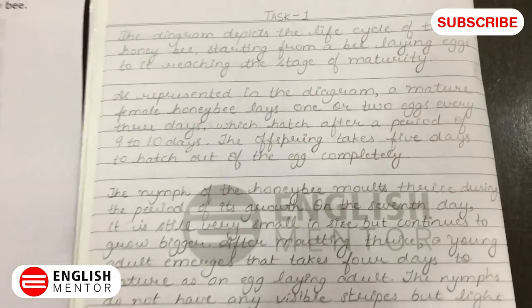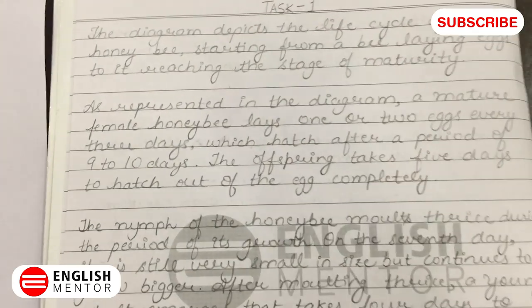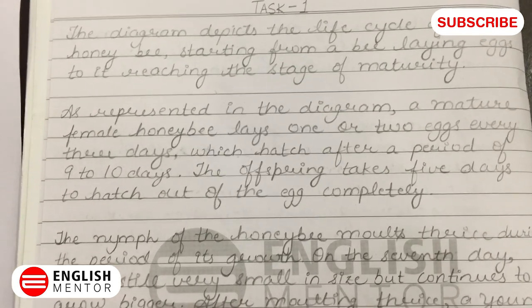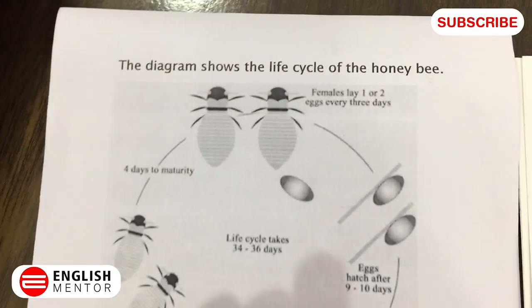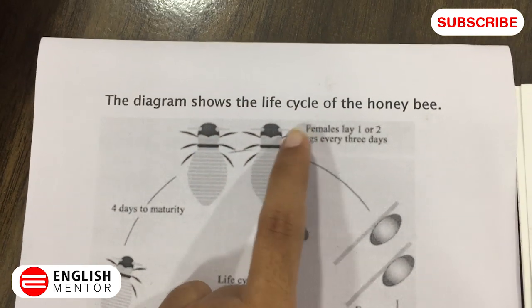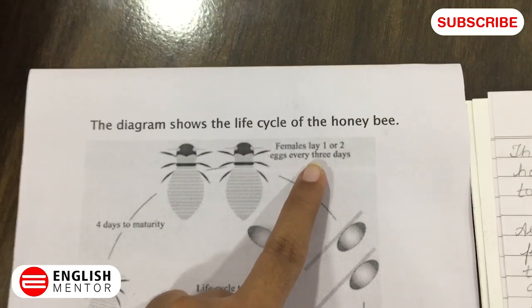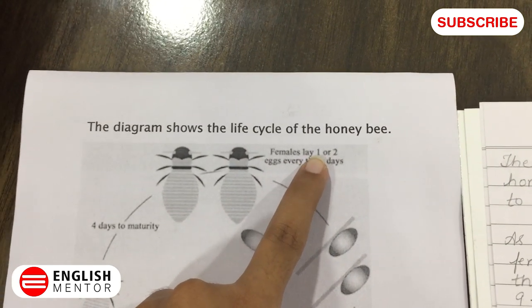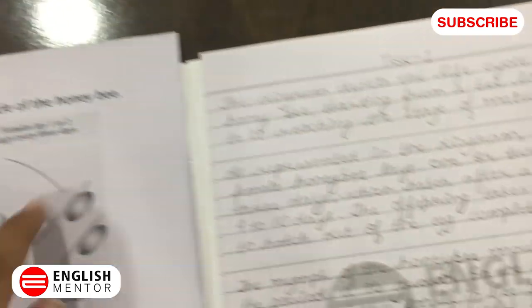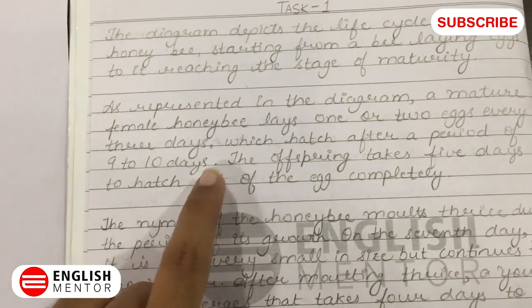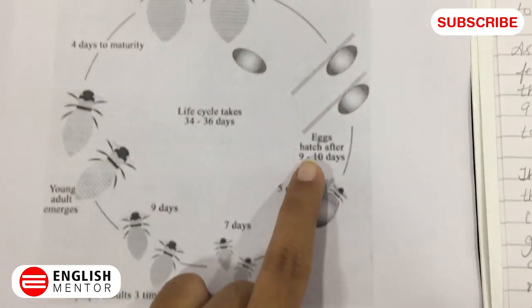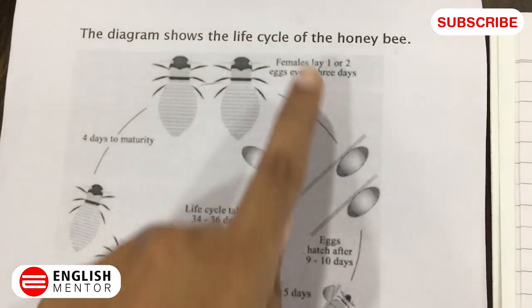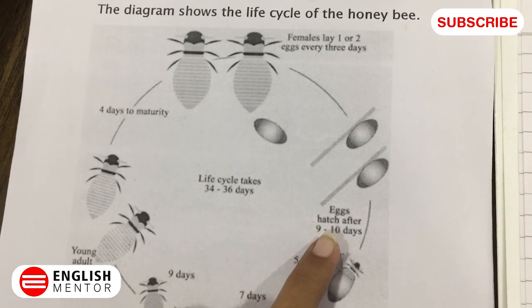Now coming to the first paragraph, you can start it with: as represented in the diagram, a mature female honeybee lays one or two eggs every three days. This information has been given to us — females lay one or two eggs every three days. Note that numbers represented in digits must be written in word form. Next: which hatch after a period of nine to ten days. We have been given the information that after laying the eggs, the eggs hatch after nine to ten days.